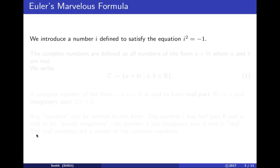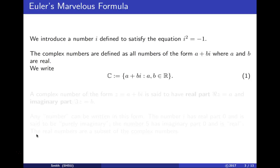We introduce a number i defined to satisfy the equation i² = -1. The complex numbers are defined as all numbers of the form a + bi where a and b are real.